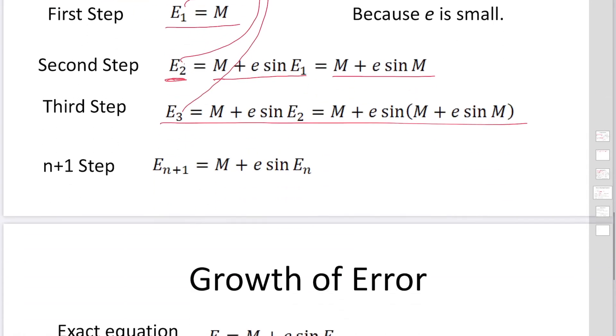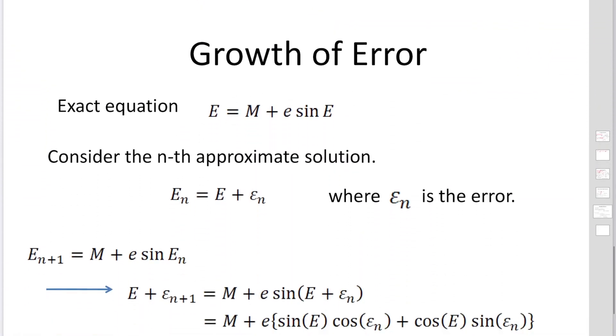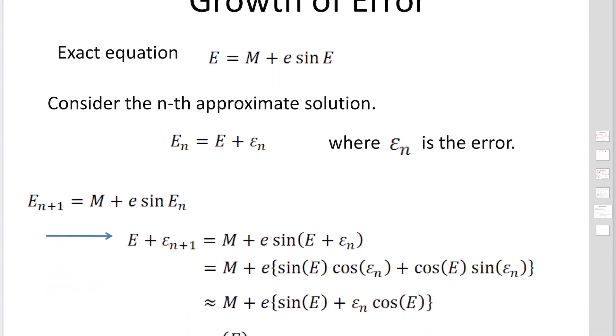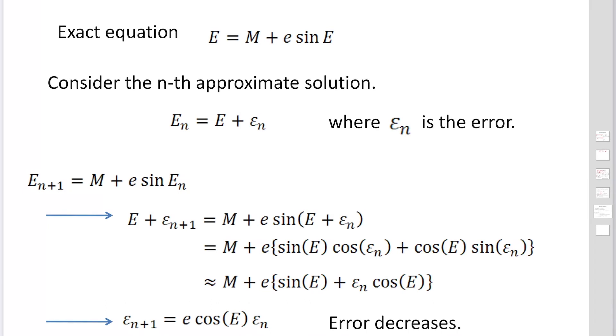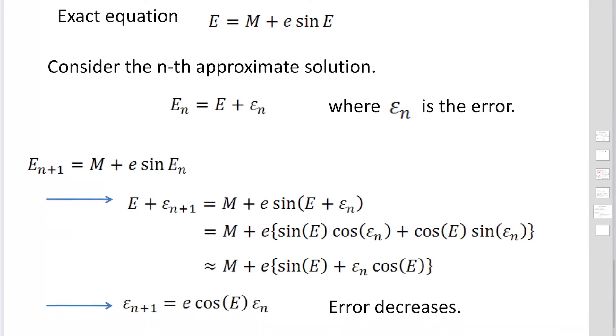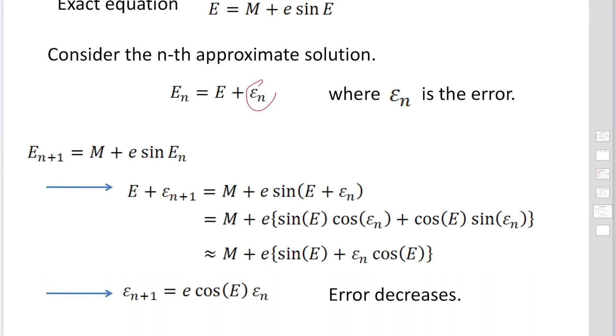Then we have to check what's happened to the errors. So exact solution is E equal M plus E sine E. And considering the nth approximate solution has an error of Epsilon sub n. So E is the exact solution. Then if we are going to consider whether the error is increasing or decreasing, substitute this equation here to find out the next approximate solution as we have done before.